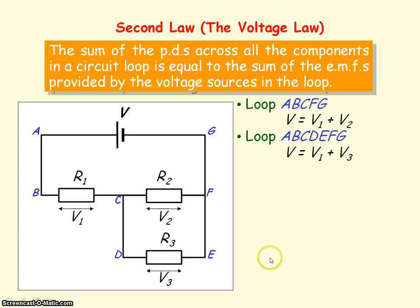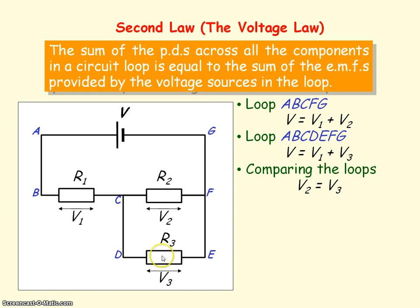If we compare the two loops, we can then see that V2 must equal V3. So that is confirming that voltage for parallel components are the same.